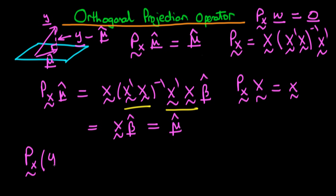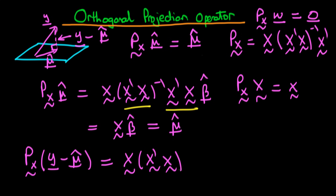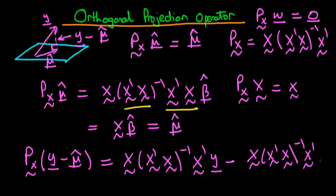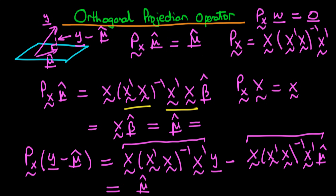If we take P(X) and multiply it by Y minus μ̂, and substitute in for P(X), we get X(X'X)⁻¹X' times Y, minus X(X'X)⁻¹X' times μ̂. The first term should look familiar — we found that this is the definition of μ̂, since μ̂ is actually P(X) operated on Y. So the first term just yields μ̂. And we already know from this video that P(X) times μ̂ is also μ̂. So we get μ̂ minus μ̂, which equals zero.